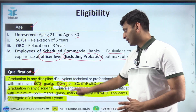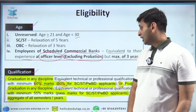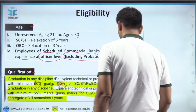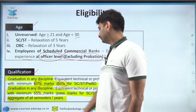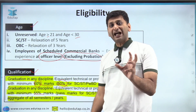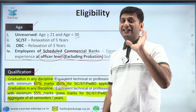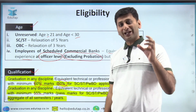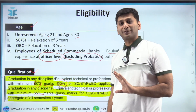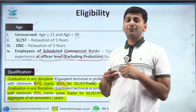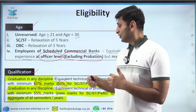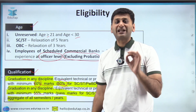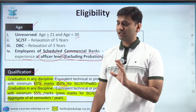Alternatively, post-graduation in any discipline with 55 percent qualifies you. Post-graduation is not mandatory — a plain graduate with 60 percent is fine. But if your graduation has less than 60 percent and you have done post-graduation with 55 percent, you are eligible. For SC/ST and PwBD, only passing marks in post-graduation are required.